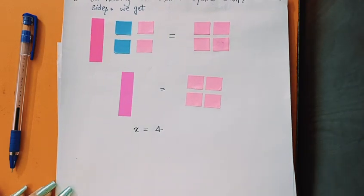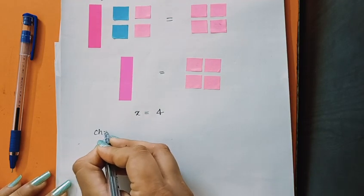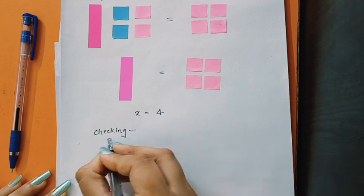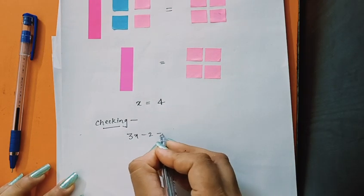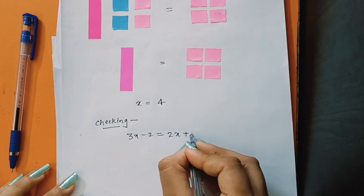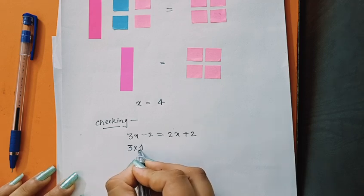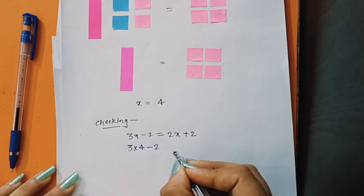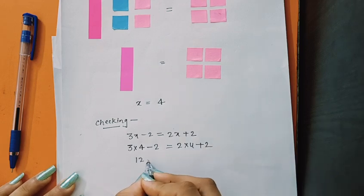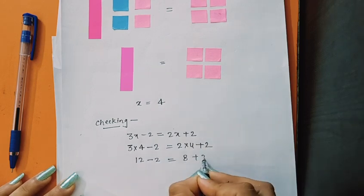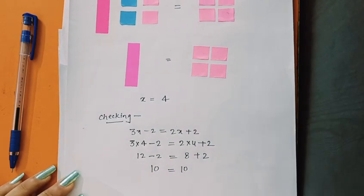Now let us check the above equation by substituting x equals to 4. So equation is 3x minus 2 is equal to 2x plus 2. Now put in place of x equals to 4. So 3 into 4 minus 2 is equal to 2 into 4 plus 2. So 12 minus 2 is equal to 8 plus 2. So 10 is equal to 10. Left hand side is equal to right hand side.